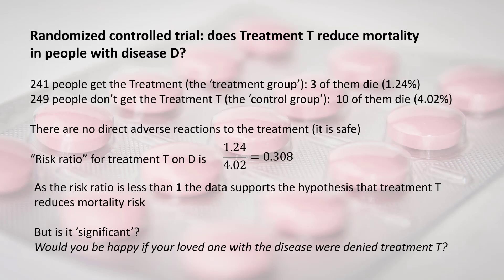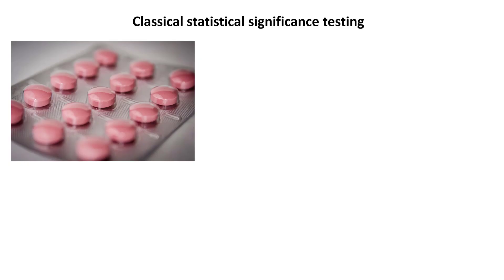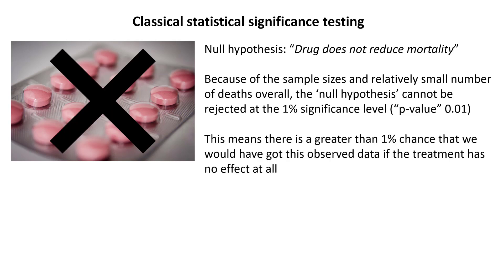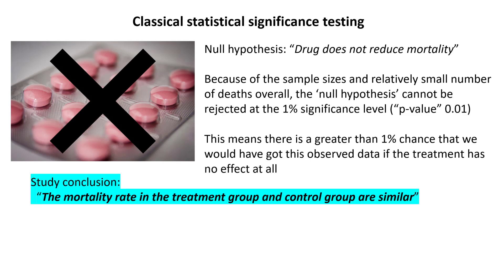Before we go into that question, look at the data — would you be happy if your loved one with the disease were denied treatment T? With classical statistical significance testing, we start with a null hypothesis that the treatment does not reduce mortality. Because of the sample sizes and relatively small number of deaths overall, this null hypothesis cannot be rejected at the 1% significance level — the so-called p-value of 0.01 — meaning there's a greater than 1% chance we would have observed this data if the treatment had no effect at all.